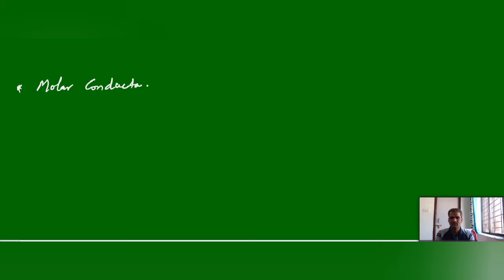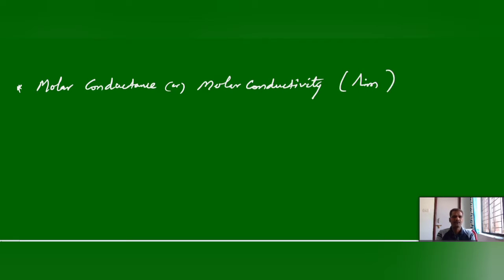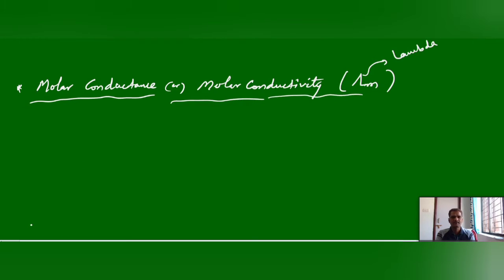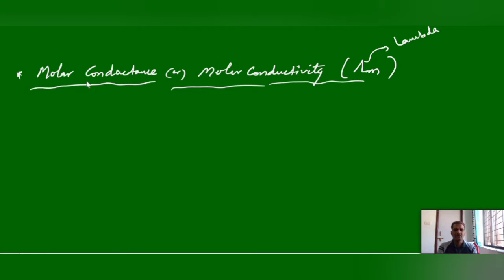Molar conductance or Molar Conductivity is represented with the symbol lambda M. We can define Molar Conductance as the conductance of all ions of 1 mol of electrolyte that is present in an electrolytic solution.